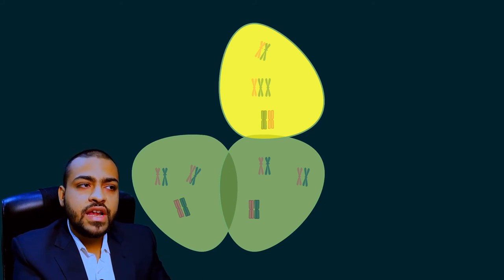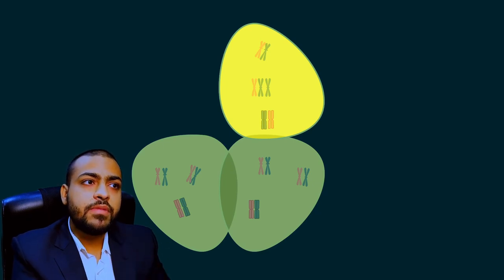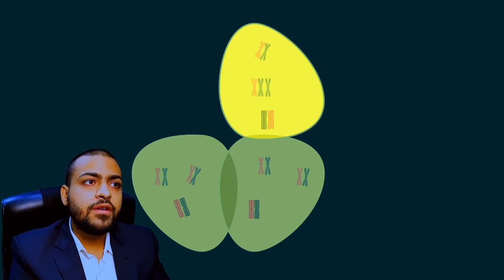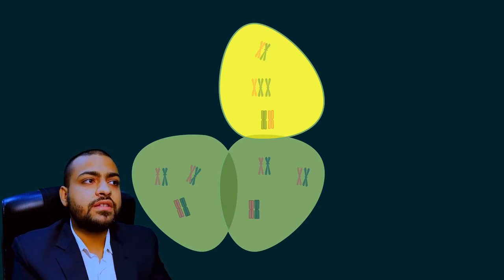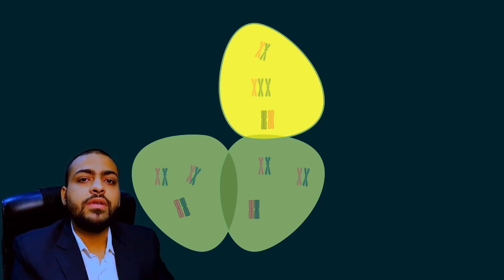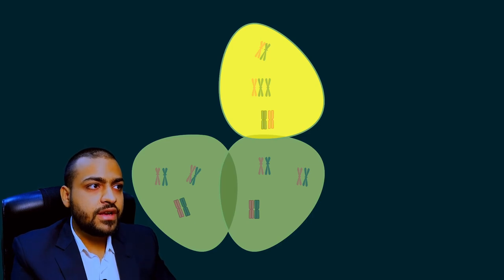It is quite possible that the person may not develop any disease at all if very few cells are abnormal. In fact, it has been observed that even in the brains of normal persons, some cells are abnormal — there may be some trisomy or monosomy even in a normal person. This was the concept of mosaicism.